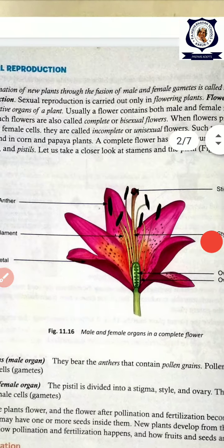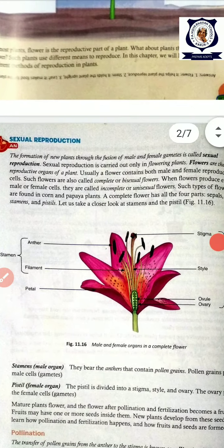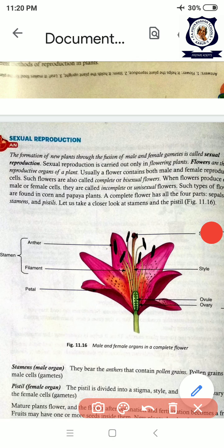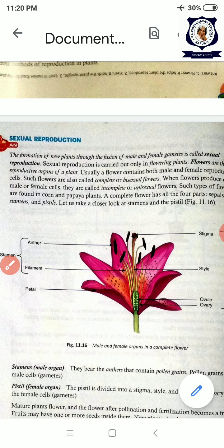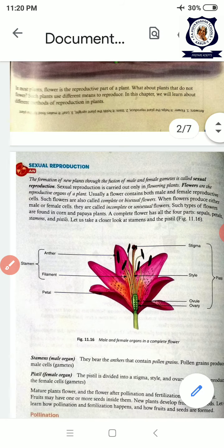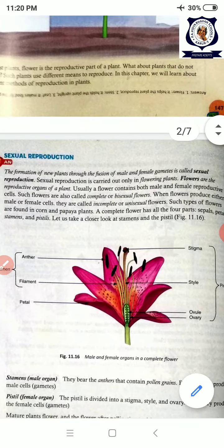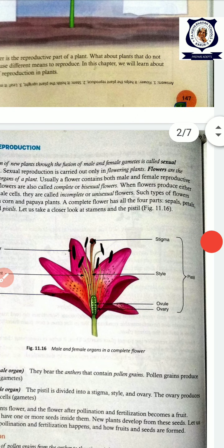Now, what are the four parts of the flower? The flower has calyx — the green colored part at the bottom of the flower. Then beautiful, colorful petals called the corolla. And then the pistil and the stamens.